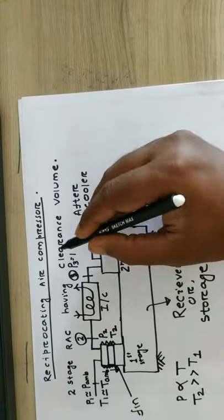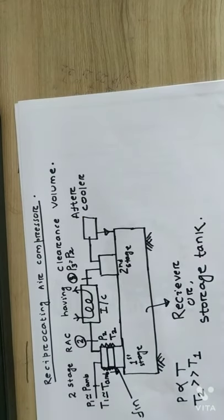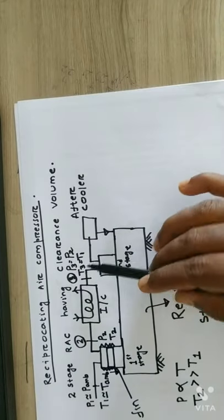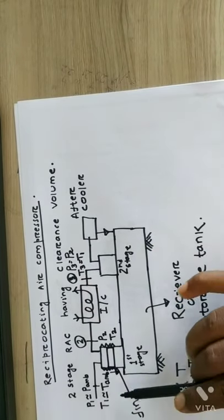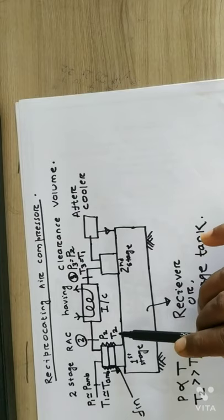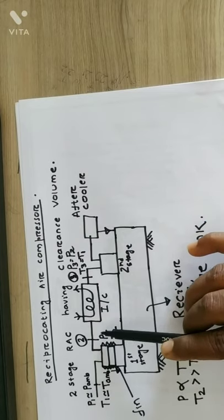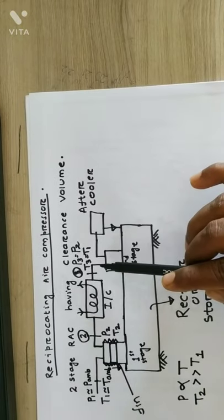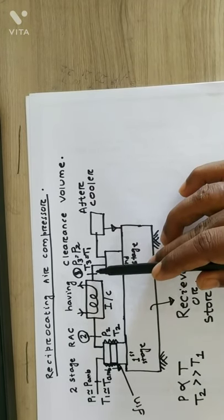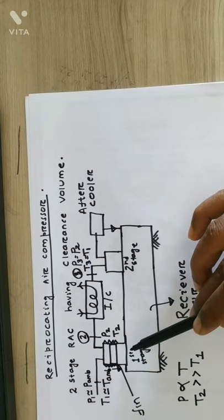At state point 3, the temperature T3 should be equal to T1, which is ambient temperature. The rise in temperature recorded by the first stage compressor at T2 is reduced by the intercooler — heat is released to the cooling water, and the compressed air temperature is reduced back to T1. This cooled compressed air is then fed into the second stage compressor.